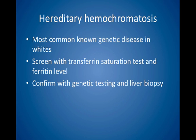Hereditary hemochromatosis is currently the most common known genetic disease in white people. The initial symptoms, including fatigue and impotence, are nonspecific, but patients often have hepatomegaly. Screen with the transferrin saturation test and ferritin level. Treat with phlebotomy after confirming the diagnosis with genetic testing and liver biopsy.